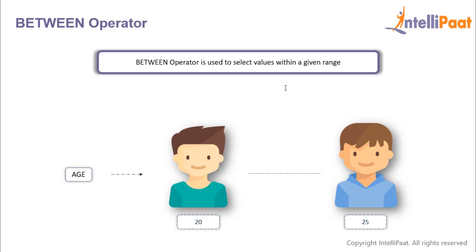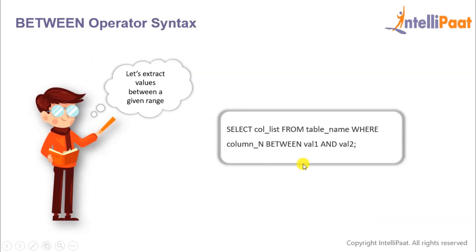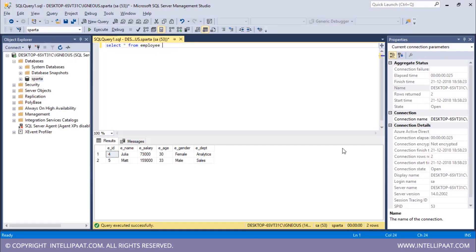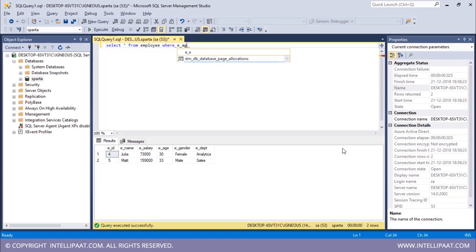Now let's look at the BETWEEN operator. The BETWEEN operator is used to select values within a given range. For example, we can extract only those records where the age of the person is between 20 and 25. The syntax: after the WHERE clause, give the column name, then the BETWEEN keyword, followed by the lower value of the range, then the AND operator, and then the maximum value of the range. So we want to extract all employees whose age is between 25 and 35.